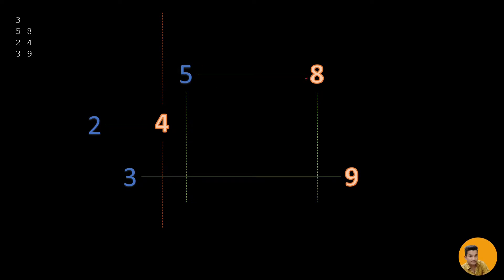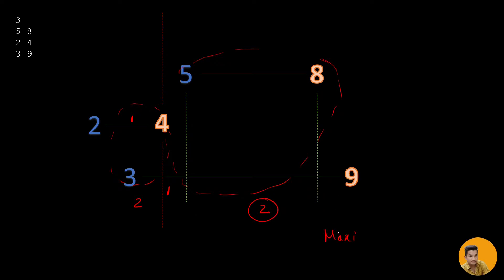Let's see how. The first customer sits from 5 to 8, the second from 2 to 4, and at time 3 we encounter another customer. So at that point we have two customers simultaneously. At time 4 the second customer leaves, leaving only one. Then the first customer arrives at 5, and the third customer is sitting from 3 to 9, so at that span we again have two customers — making the maximum 2.